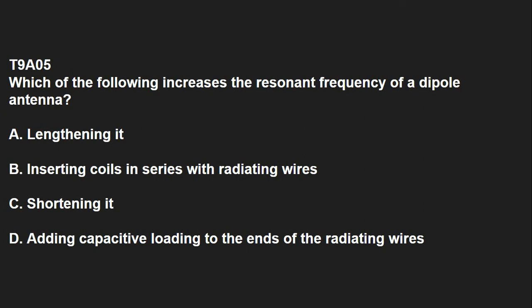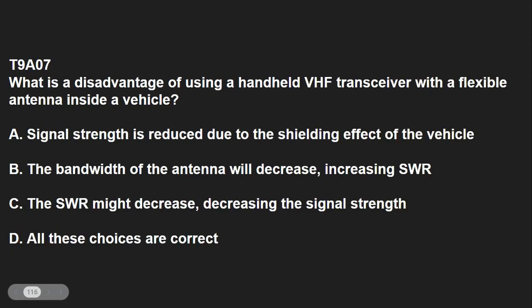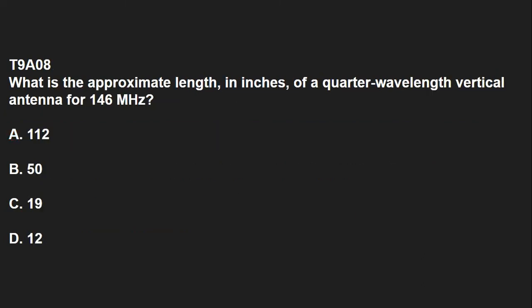T9A05: Which of the following increases the resonant frequency of a dipole antenna? T9A06: Which of the following types of antennas offers the greatest gain? A Yagi. T9A07: What is the disadvantage of using a handheld VHF transceiver with a flexible antenna inside a vehicle? The signal strength is reduced due to the shielding effect of the vehicle. T9A08: What is the approximate length in inches of a quarter-wavelength vertical antenna for 146 MHz? That's 19 inches.